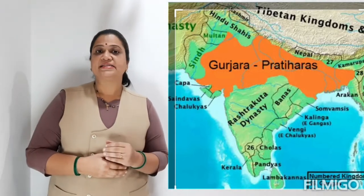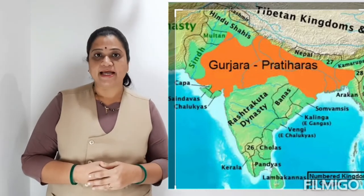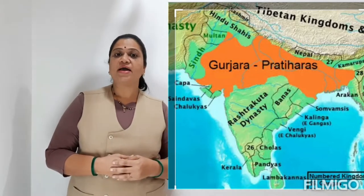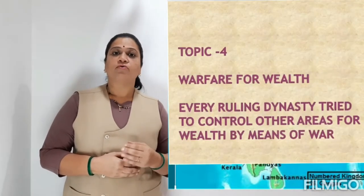This is the reason why we have Warfare for Wealth. In our textbook, three examples are given: first, the Three-Party Struggle for Kannauj; second, the Attack of Muhammad Ghazni; and third, Prithviraj III versus Muhammad Ghori.